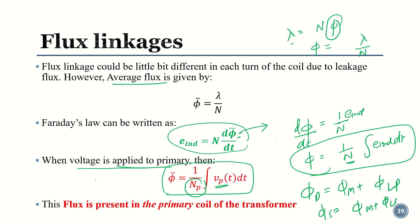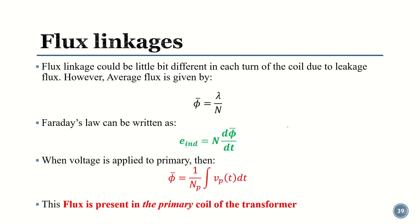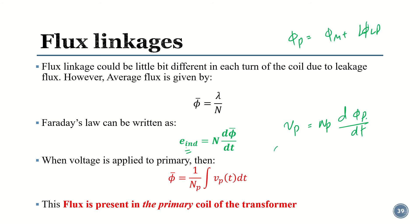Applying Faraday's law to the primary side: the primary voltage equals the number of primary turns times the rate of change of the total primary flux. Since total flux equals mutual flux plus leakage flux, the primary voltage expression expands to N_p times the rate of change of mutual flux plus rate of change of leakage flux.